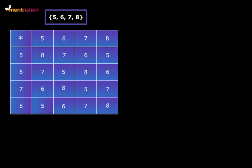In the operation table, we have denoted A star B as the entry in the column headed by A and the row headed by B.